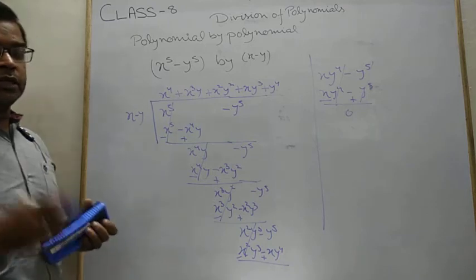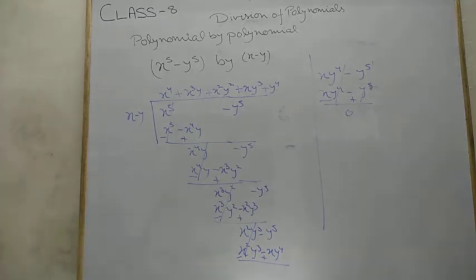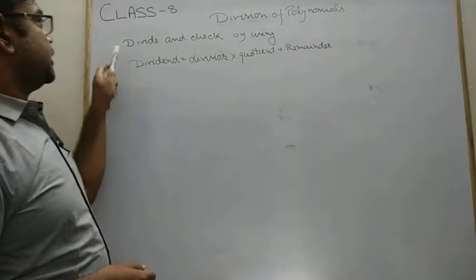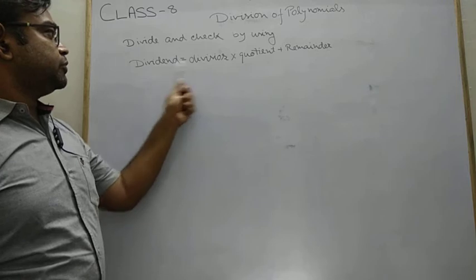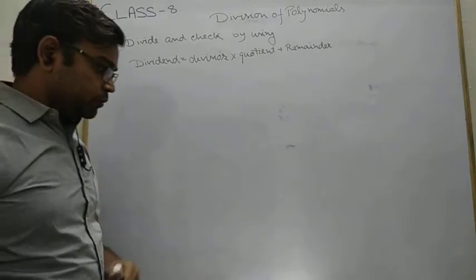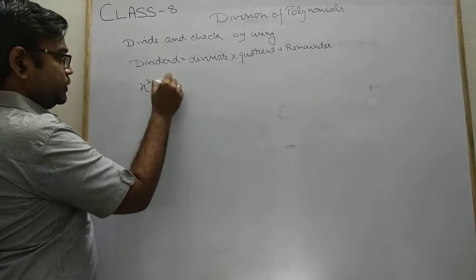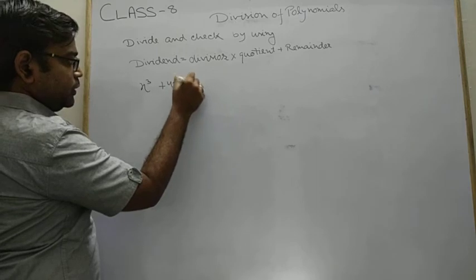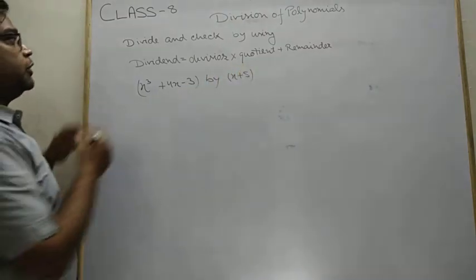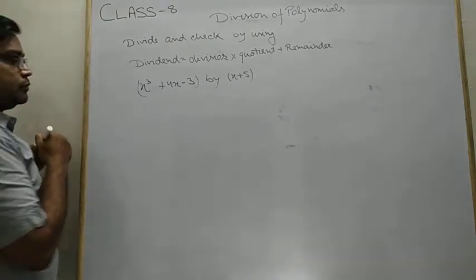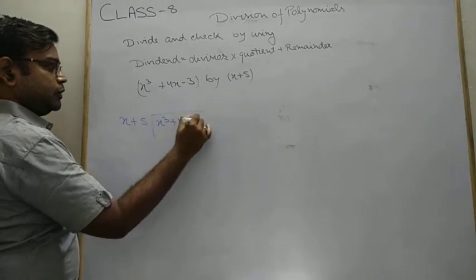For more questions, I am going to discuss the last question given in the book, about verification type questions. In this type of question, it says first to divide, then check by using the division rule. This is your division rule now: dividend equals division into quotient plus remainder. So I am going to pick one question from your text: x³ plus 4x minus 3 by x plus 5. So first we do the division, then verify them.